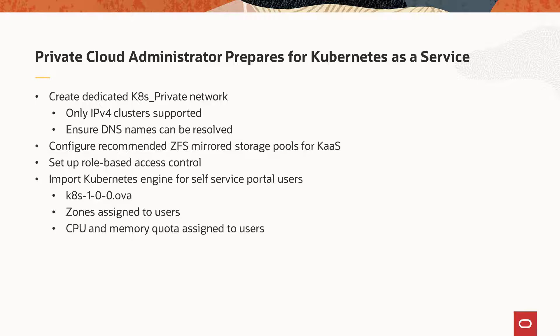Self-Service Portal users are granted access through their role and then through association with the zones in which they are allowed to operate. An administrator imports the Kubernetes engine into all repositories supporting zones in which Kubernetes clusters are expected to be deployed. The Kubernetes engine is an Open Virtual Appliance, or OVA, formatted file, and the file name must be all lowercase: k8s-1-0-0.ova.